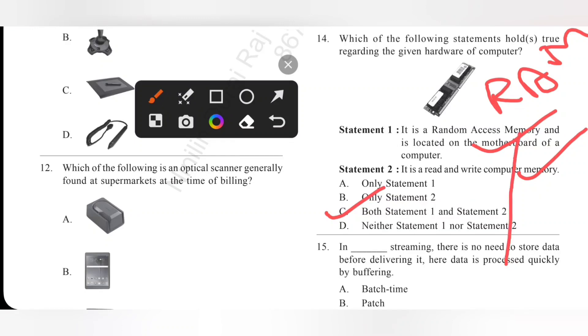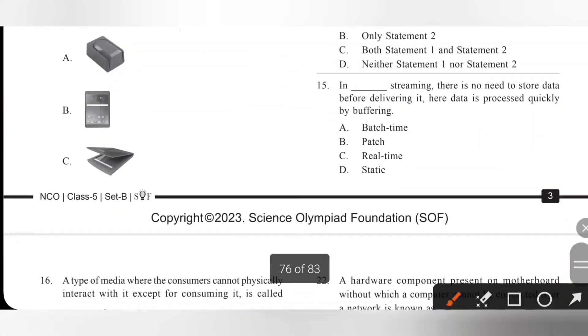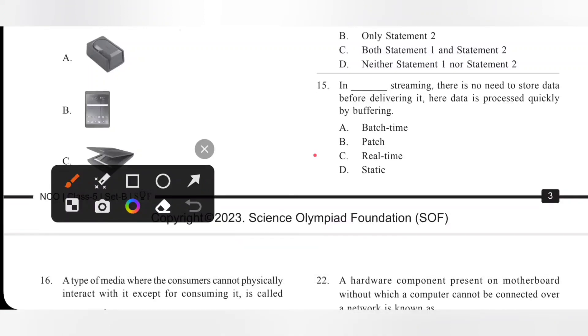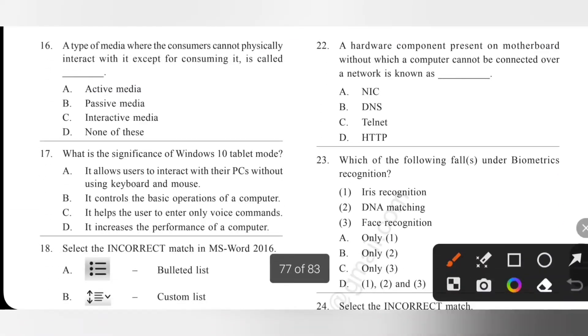Next one, in dash streaming there is no need to store data before delivering it. Here data is processed quickly by buffering. In real-time streaming there is no need to store data before delivering it. Here data is processed quickly by buffering. Option C is the correct answer. Sixteenth one, a type of media where the consumers cannot physically interact with it except for consuming it is called passive media. Indirect media. Option B is the correct answer.